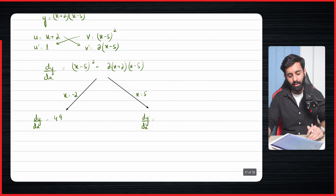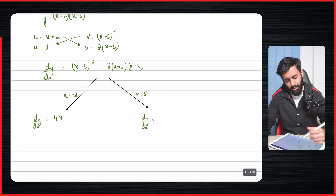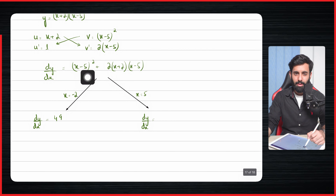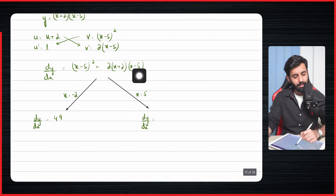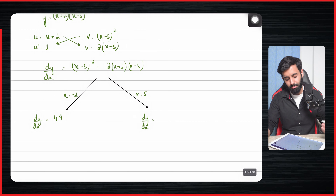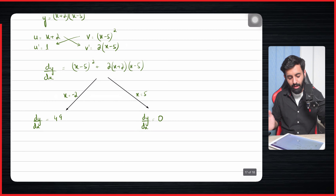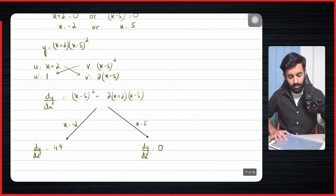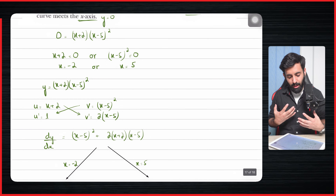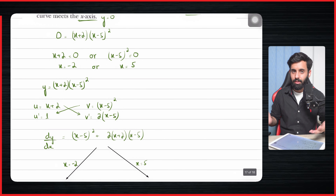Now plug in x=5: (5−5)² is 0, and 2(5+2)(5−5) also contains (5−5)=0, so the whole expression equals 0. So the gradients are 49 at x=−2 and 0 at x=5. That's it — I hope you've understood both how the product rule is applied and how to solve word problems using it. In the next video we'll start with the quotient rule. Take care, bye.